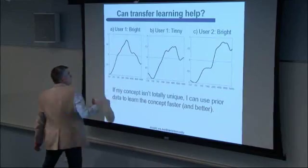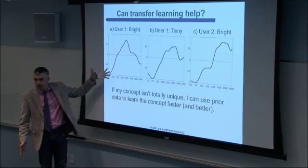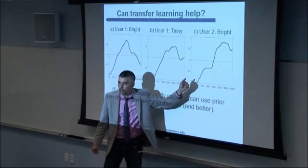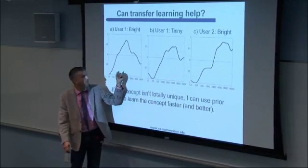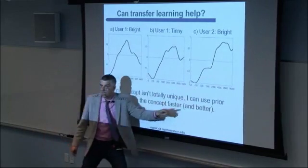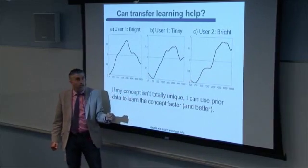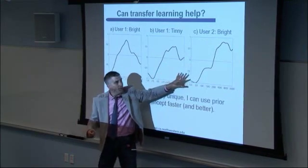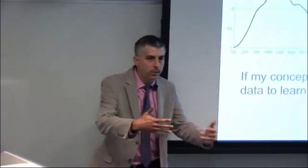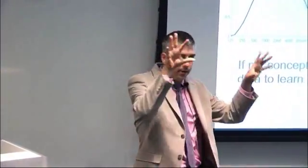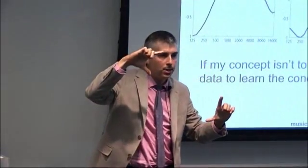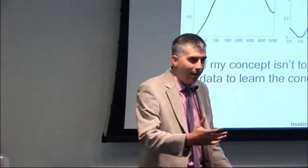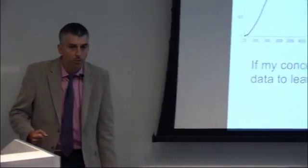These are equalization curves that two different users produced for different words: bright and tinny from user one, bright from user two. Qualitatively, the two "bright" curves look more like each other than the two curves sharing the label "tinny." So one person thinks of a certain EQ setting as tinny — probably something they don't like — while another person calls it bright. We have a distribution of meaning, and so how do we deal with that when trying to have something interact with us?